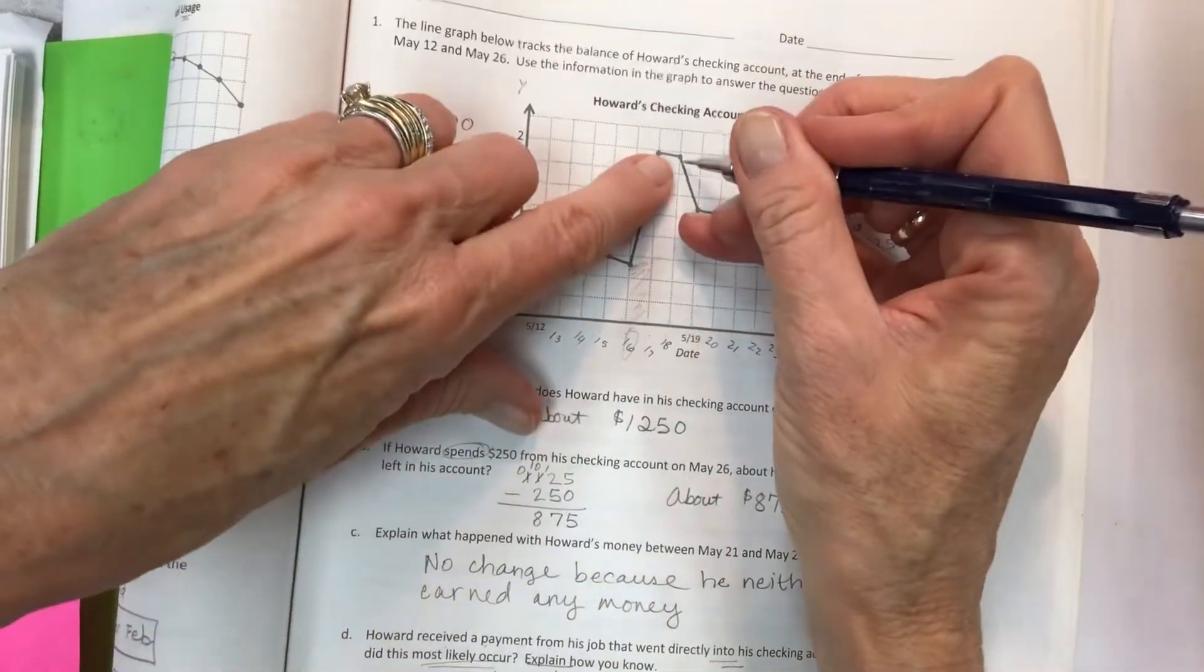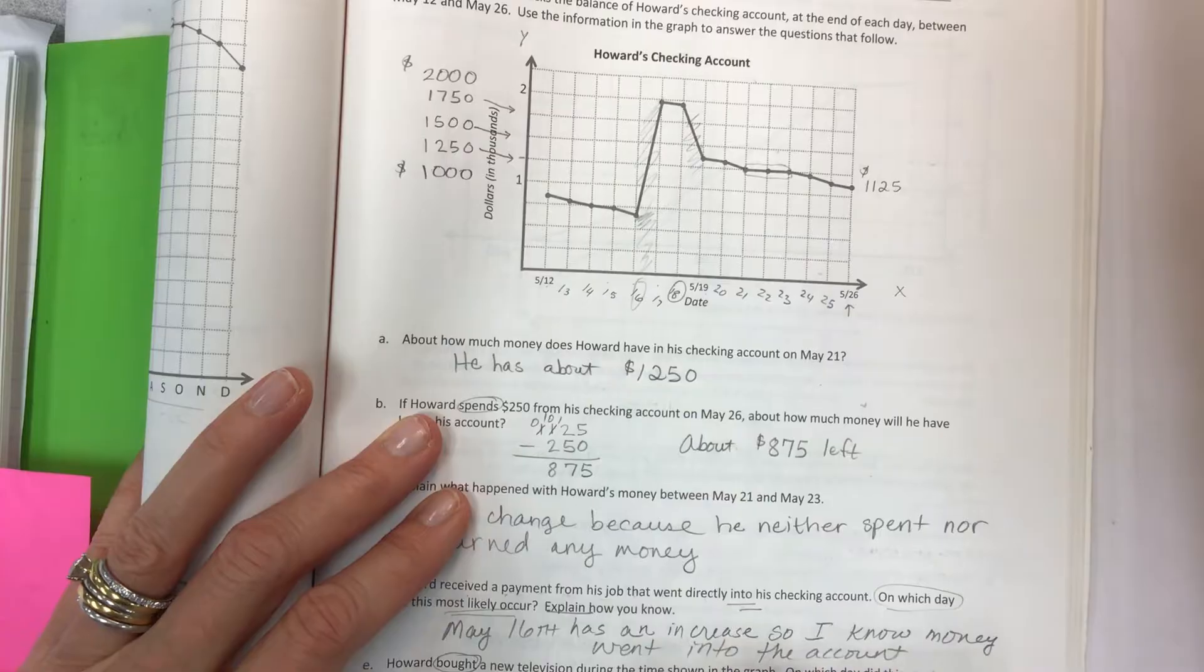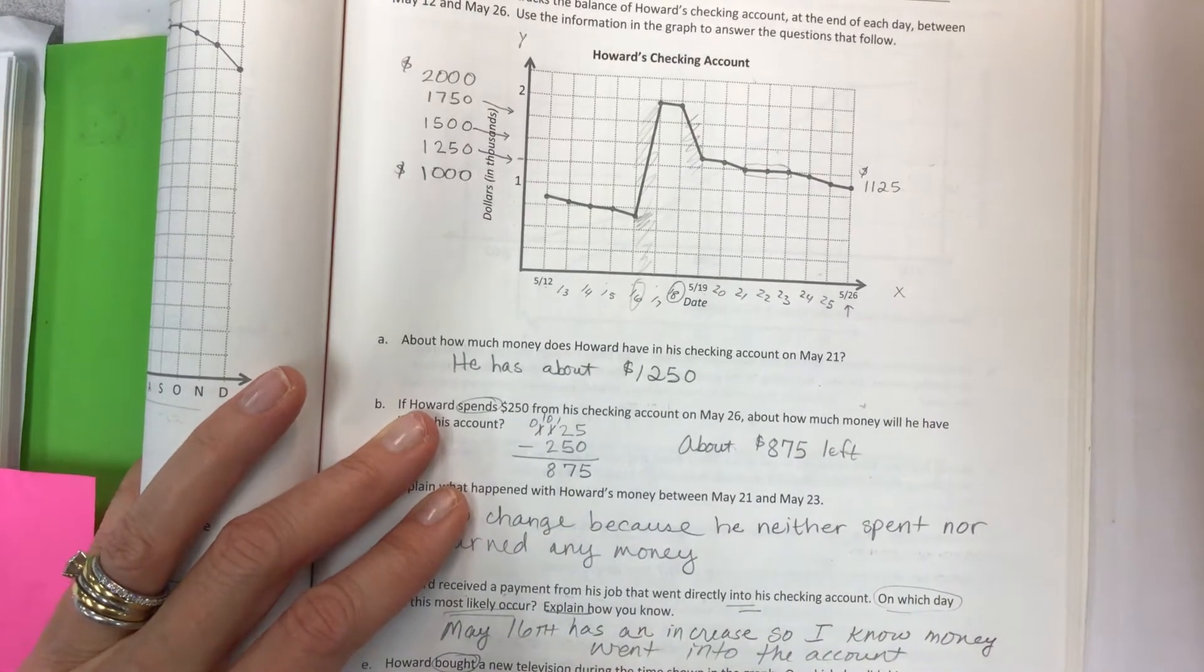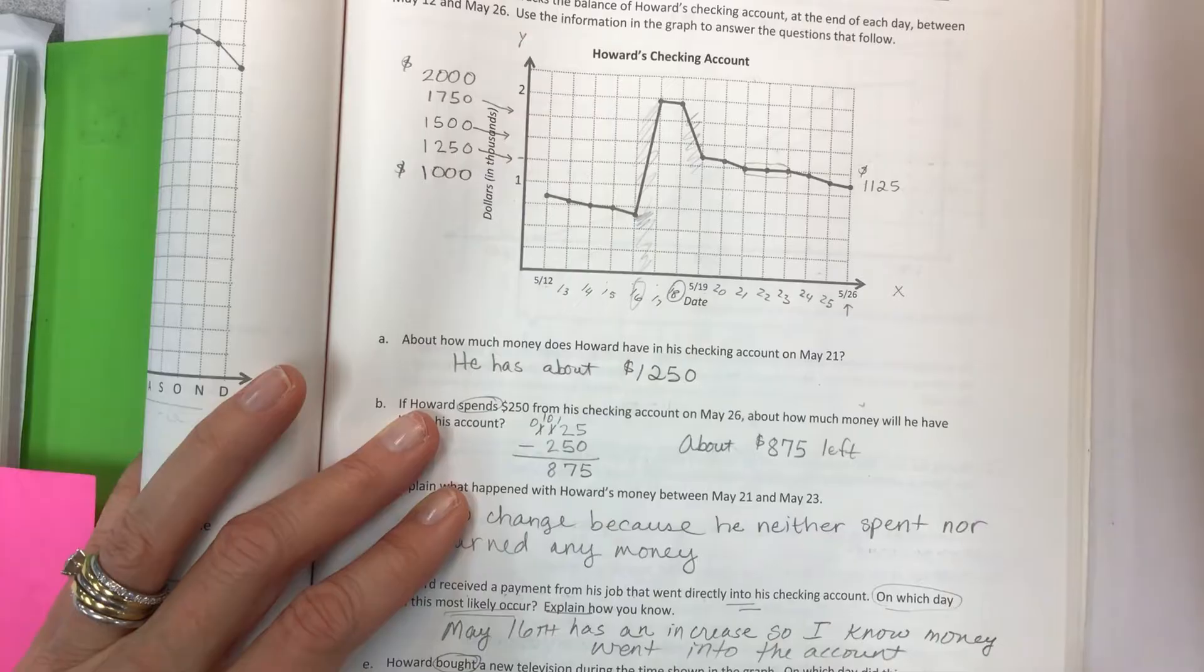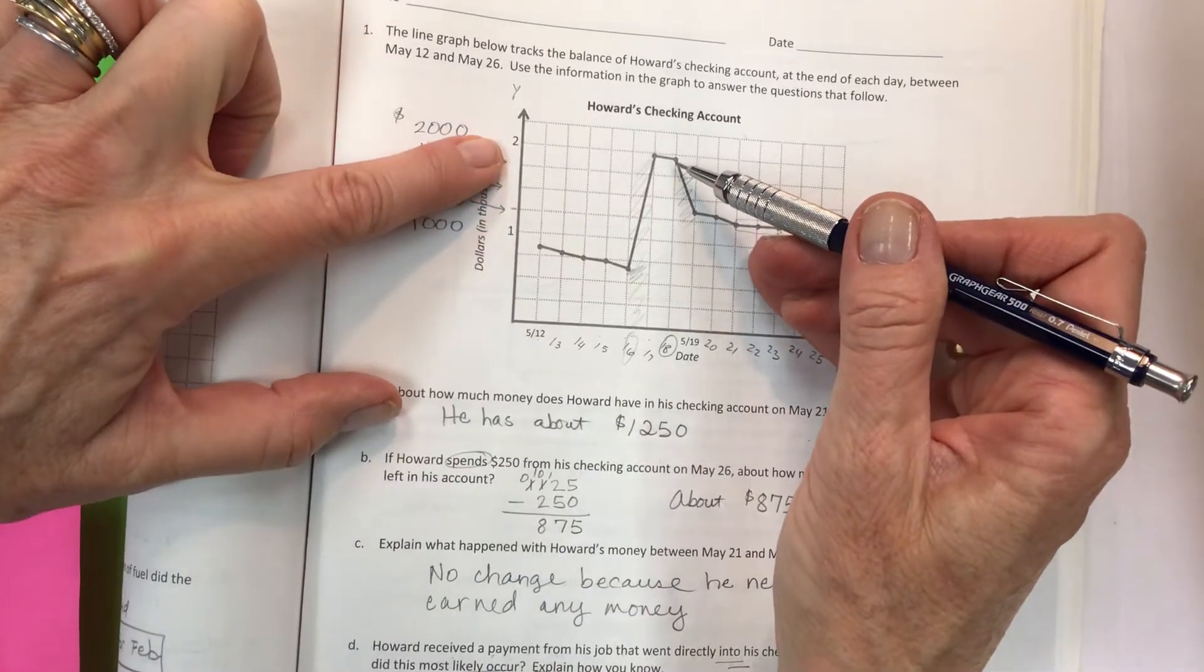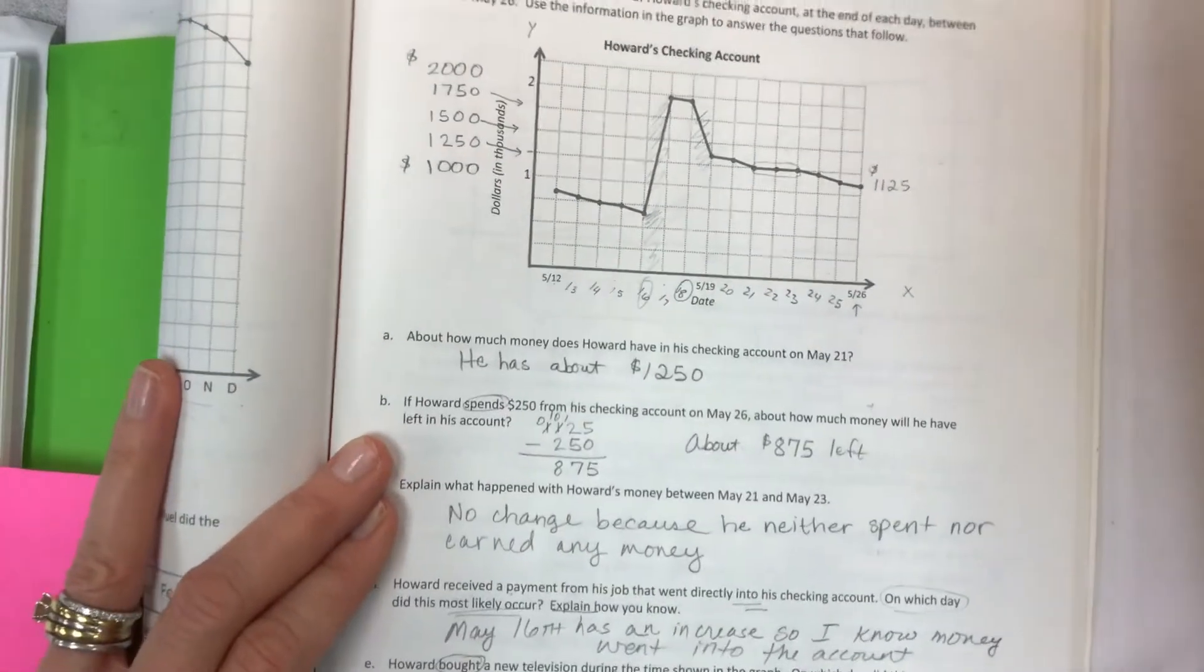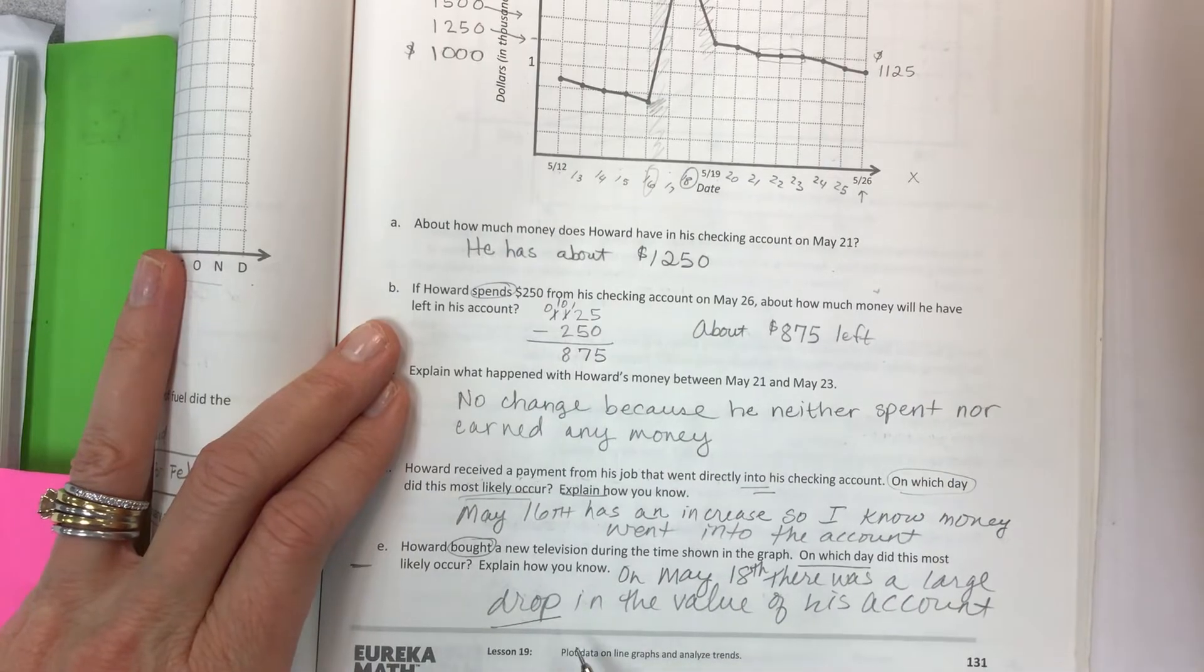Which day is this? Then you go down here and you say, on May 18th there was a large drop in the value of his account. And that is the money is going down. Big expense. If he had almost $2,000 in it and he ends up with only a little bit more than $1,200, maybe $1,300, that's a big expense or payment that goes out that day. So on May 18th, there was a large drop in the value of his account. So that's the day and that's your reasoning.